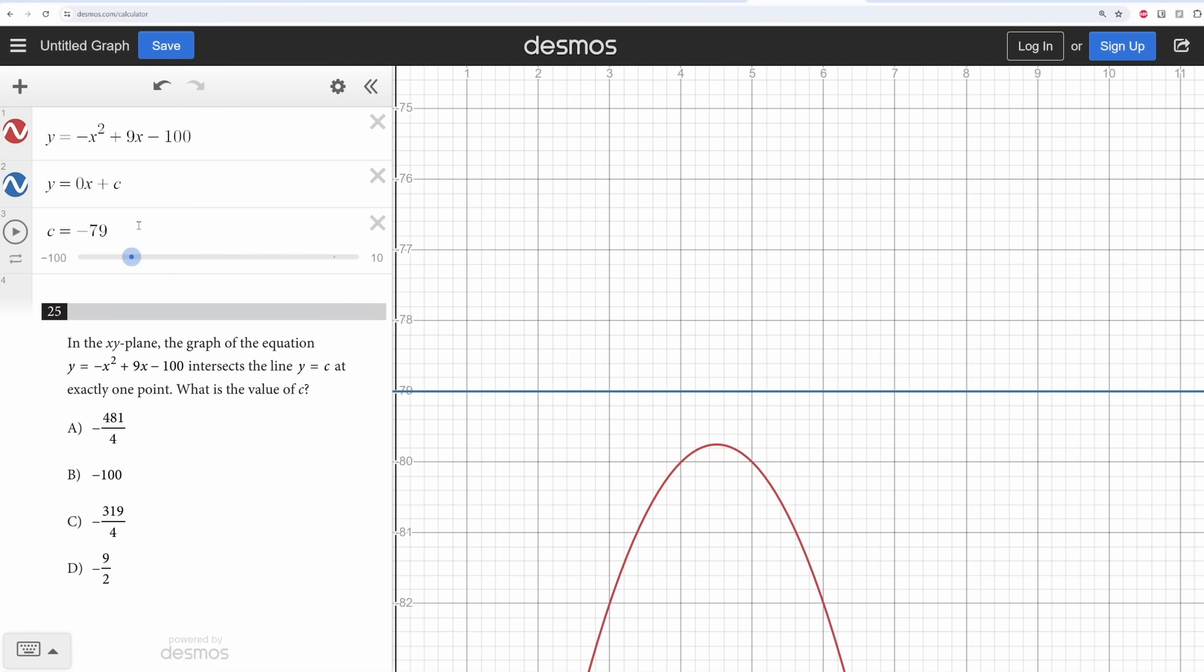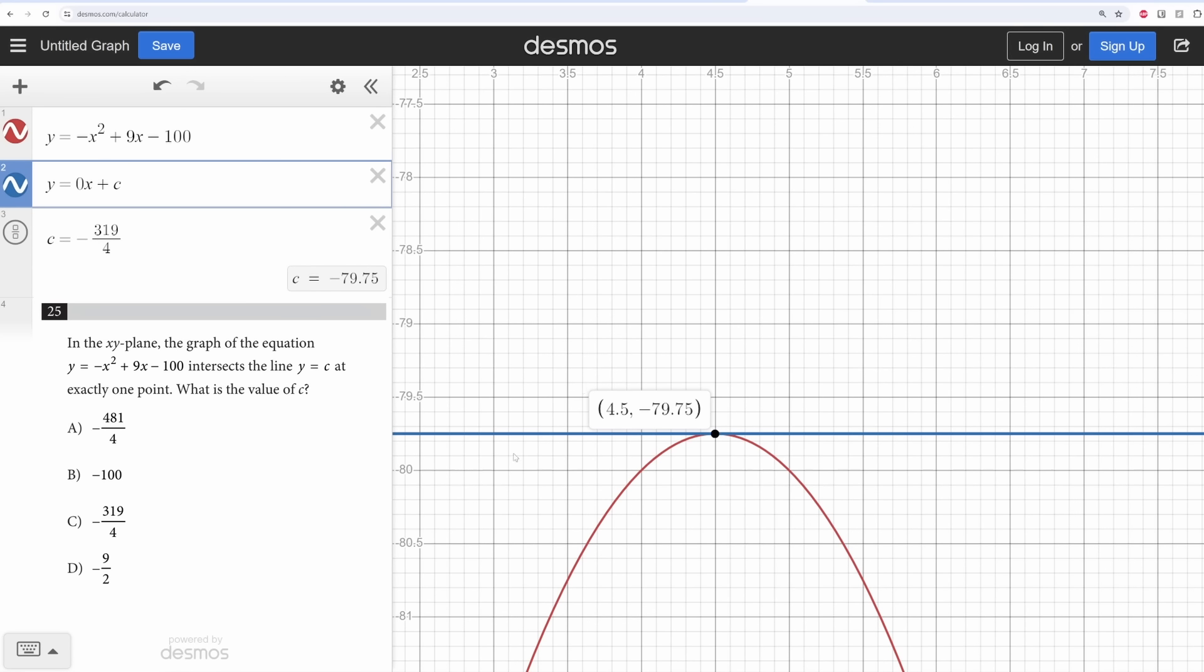So instead, let's manually input all four answer choices into Desmos. Negative 41 over 4. Nope, that's not touching. Negative 100. Nope, that's not touching. Negative 319 over 4. There we go. But this seems much longer and more tedious than it should be. If we acknowledge that the point of intersection is the vertex of the quadratic, then we don't even need this line. We can just graph our quadratic, click on the vertex, and that's our answer. Negative 79.75 is negative 319 over 4.